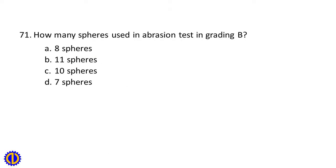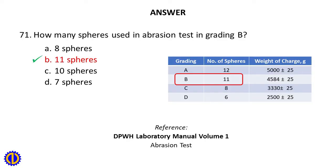Question 71. How many spheres are used in abrasion test in grading B? A. 8 spheres, B. 11 spheres, C. 10 spheres, D. 7 spheres. Answer: B. 11 spheres. Reference: DPWH Laboratory Manual Volume 1, Abrasion Test.